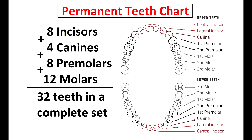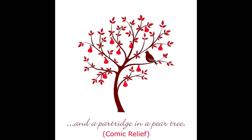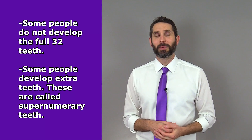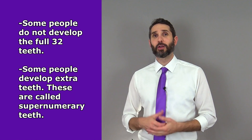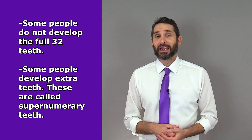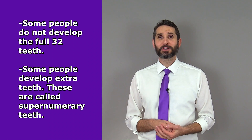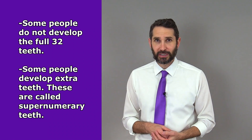On the other hand, adolescents and adults have all four types of teeth in their permanent dentition, eventually developing eight incisors, four canines, eight premolars, 12 molars, and a partridge in a pear tree. This adds up to 32 teeth in a complete set, or 16 teeth in each arch. Notice I said a complete set, because some people won't actually develop all 32 teeth. In addition, some people will develop more than 32 teeth, and those extra teeth are referred to as supernumerary teeth.